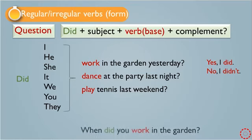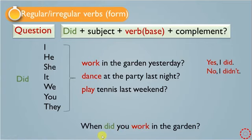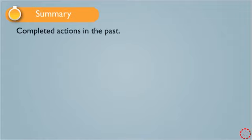We also have WH-question form. We put the WH-question word before 'did' at the beginning of the sentence. For example: 'When did you work in the garden?' or 'How did you work in the garden?' or 'Where did you work?' — this is the question form with WH-question words.